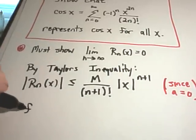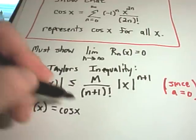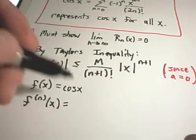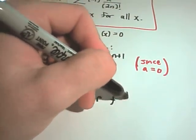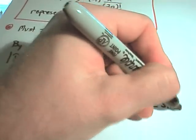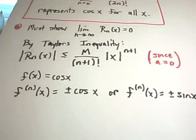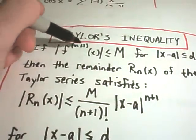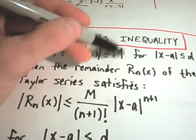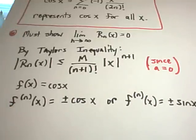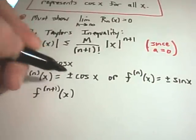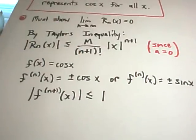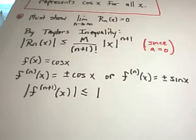One thing to notice here is that if your function is cosine of x, no matter what derivative you're at, you're either going to get positive or negative cosine of x, or the nth derivative is going to be positive or negative sine of x. In either case, we have to bound the n plus first derivative at any value of x above by some number m. Well, if any derivative is either sine or cosine, the n plus first derivative evaluated at any number is always going to be less than or equal to one, because the biggest value you get out of cosine or sine is always one if you take the absolute value.